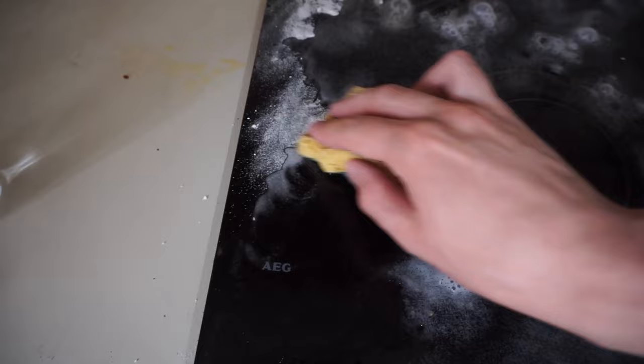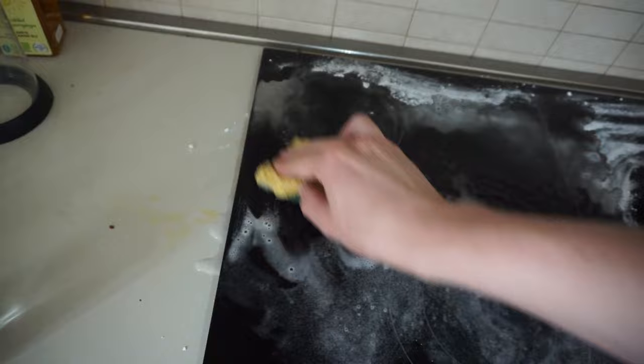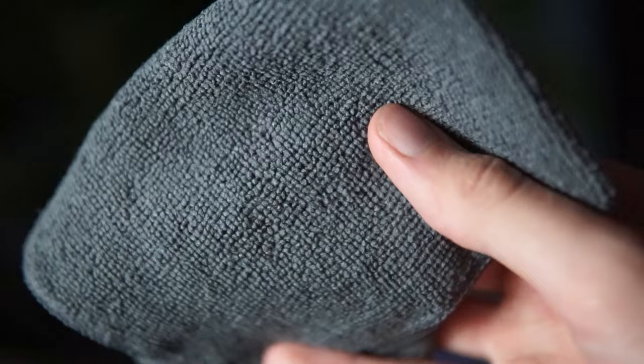And now using a sponge it's much easier to get rid of the dirt. If you're not cooking really often you can also use a microfiber cloth to polish the cooktop.